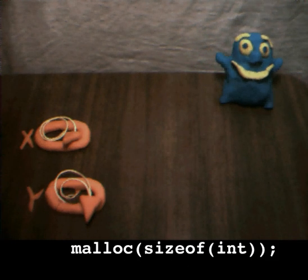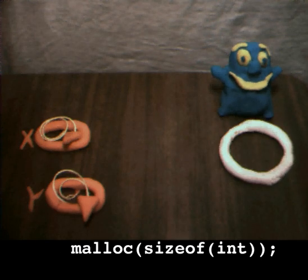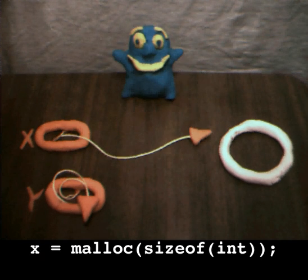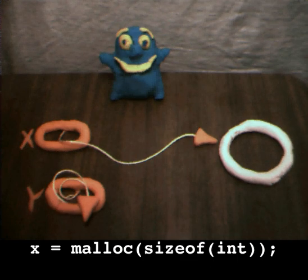Okay, well, this code allocates a new integer pointee, and this part sets x to point to it. Hey, that looks better. So make it do something.